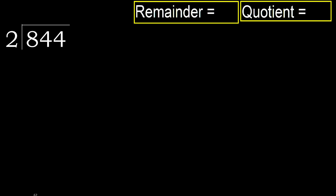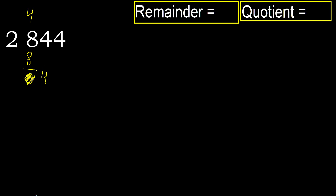844 divided by 2. 8 is not less, therefore with 8. 2 multiplied by which number is nearest to 8 but not greater? 2 multiplied by 5 is 10 — 10 is greater. Multiply by 4 is 8, is not greater. Ok. Subtract 8 minus 8 equals 0. Next, bring down 4.